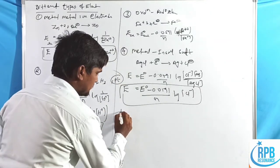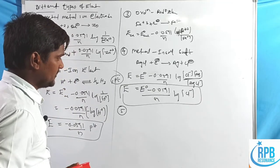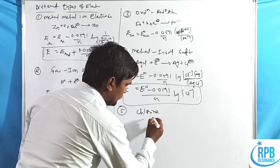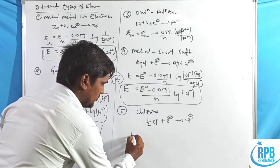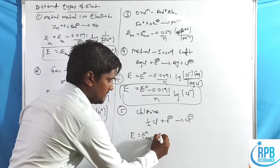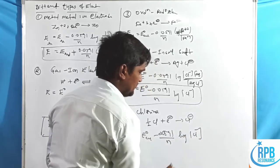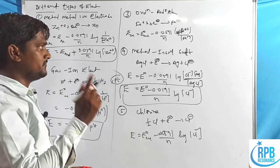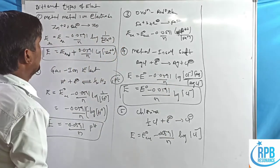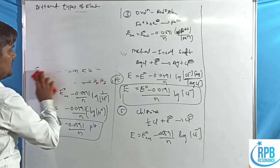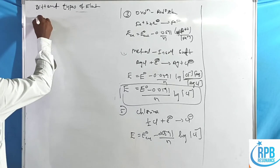Fifth, the chlorine electrode: ½Cl₂ + e⁻ → Cl⁻. Applying the Nernst equation: E = E°_cell − (0.0591/n)·log[Cl⁻].